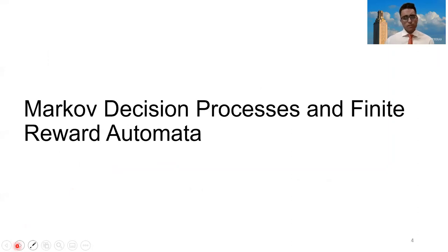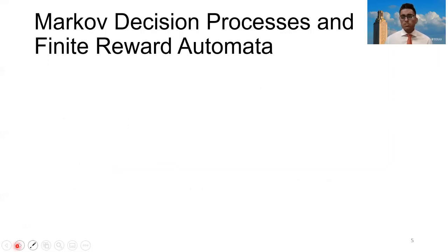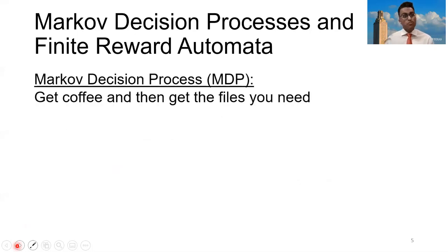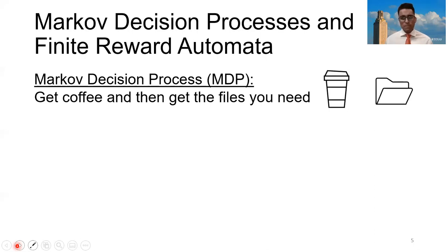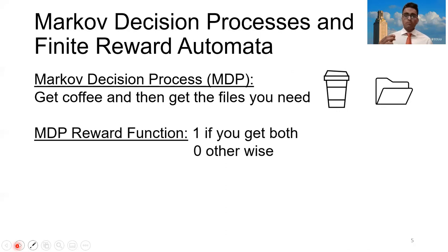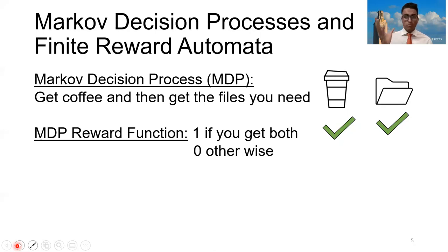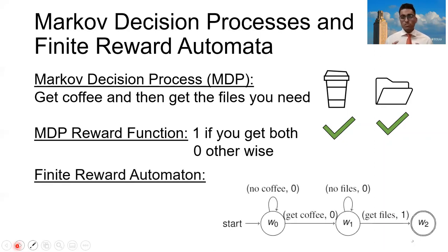Let's talk about Markov decision processes and finite reward automatons. Say you have a robot in your office and you want this robot to get you coffee and then get you the files you need. In order to incentivize the robot to do this task, you give it a reward of one if it gets you both the coffee and the files, and a reward of zero otherwise. Now let's talk about a finite reward automaton — it's an automaton that represents the rewards of any scenario. We start in state zero. If we get coffee, we move to the next state; if we don't, we stay in this state. In both cases, we get a reward of zero.